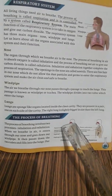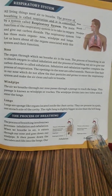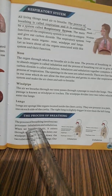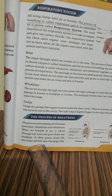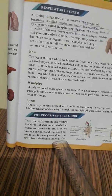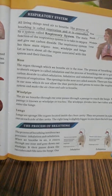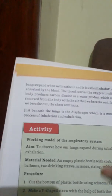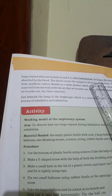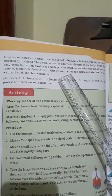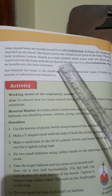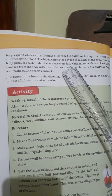Let us look at the process of breathing. Breathing involves two processes: inhalation and exhalation. When we breathe in, air enters through our nose and goes down the wind pipe, then passes through the two tubes and fills into the lungs. Our lungs expand during inhalation. In the lungs, oxygen is absorbed by the blood and carried to all parts of the body. The body then produces carbon dioxide as a waste product, which is removed from the body when we breathe out — this is called exhalation, and the chest contracts.